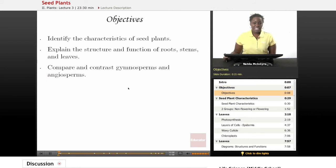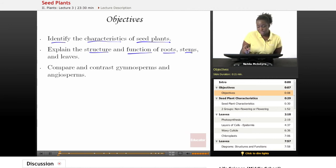Objectives for today's lesson are: number one, identify the characteristics of seed plants; number two, explain the structure and function of roots, stems, and leaves; and number three, compare and contrast gymnosperms and angiosperms.